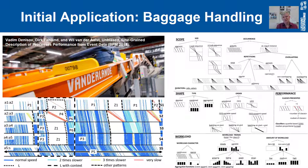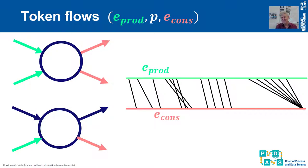The contribution of this tool paper is to combine these performance spectra together with token flows, where we use the Petri net to identify the causalities between different activities and only draw lines between activities that are causally related — not because they happen to be interleaved in a particular way. This idea is fairly straightforward but extremely useful, which is why we wrote this paper and implemented these PROM plugins.